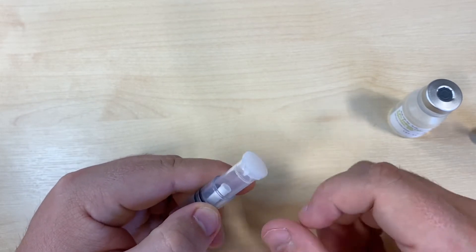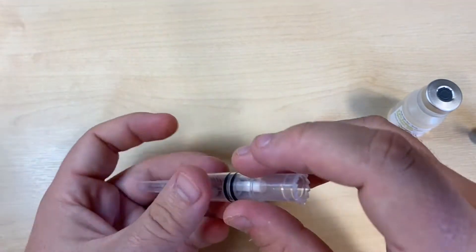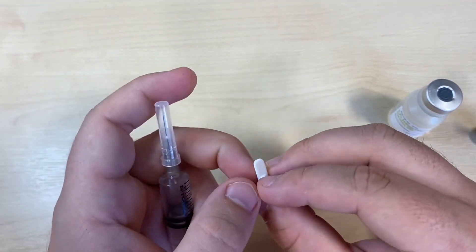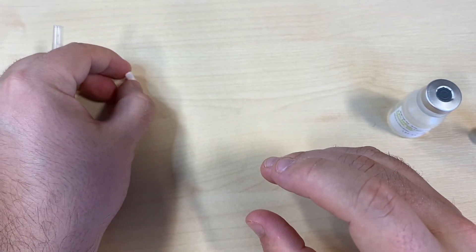There's a translucent cap on the base of the syringe that you can remove and dispose of. Inside the syringe, there's a small white cartridge cover. Keep that to one side, as it will be useful later.